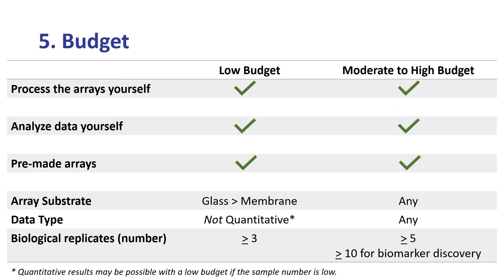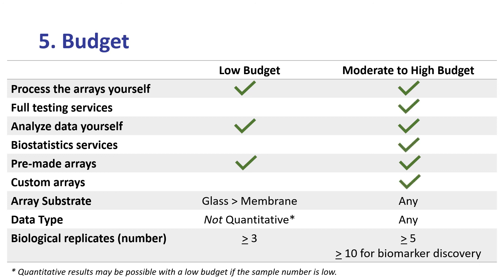If you have a moderate to high budget, more options are available. For example, you can send your samples in for full testing services and we can help analyze your data with our biostatistics and bioinformatics services. We can produce a custom array for you and you can get any type of data you want. The minimum number of biological replicates is three, and with a higher budget you can get more accurate data with more biological replicates.